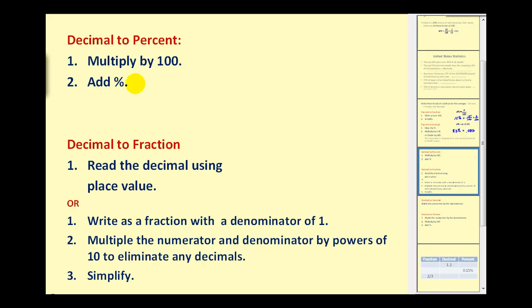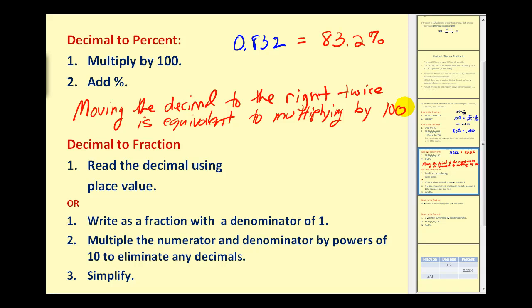Now, to convert from a decimal to a percent, we pretty much do the opposite. We multiply by 100 and then add the percent sign. So if we have the decimal 0.832, we would multiply this by 100, which is equivalent to moving the decimal place to the right twice. That would produce 83.2 and then we add the percent sign. So we should make a note here that moving the decimal to the right twice is equivalent to multiplying by 100. And that would be the shortcut.